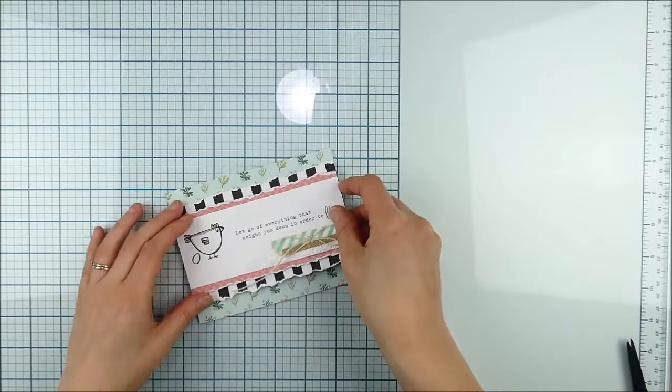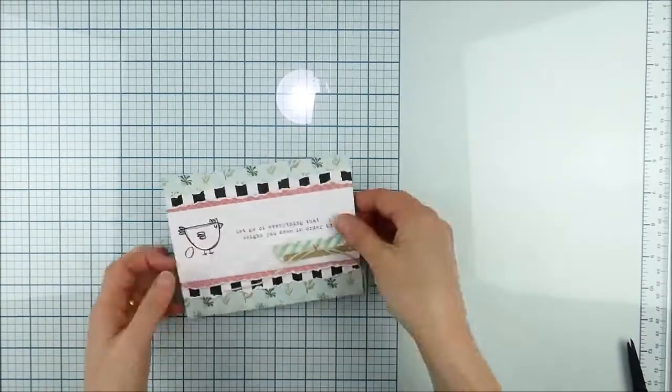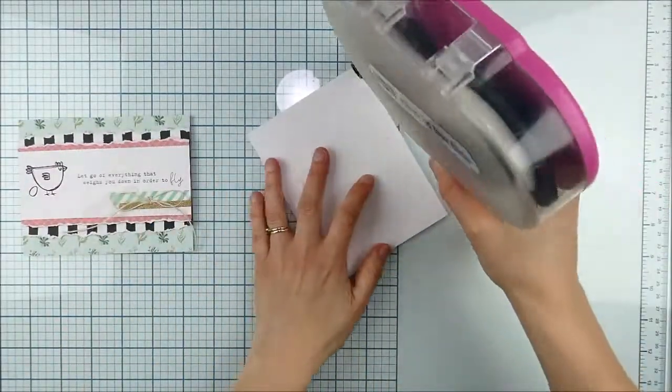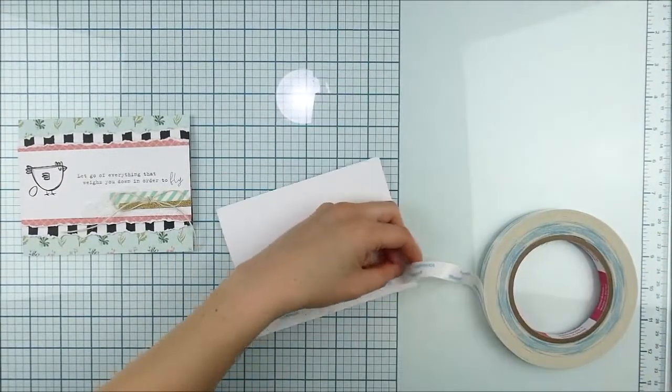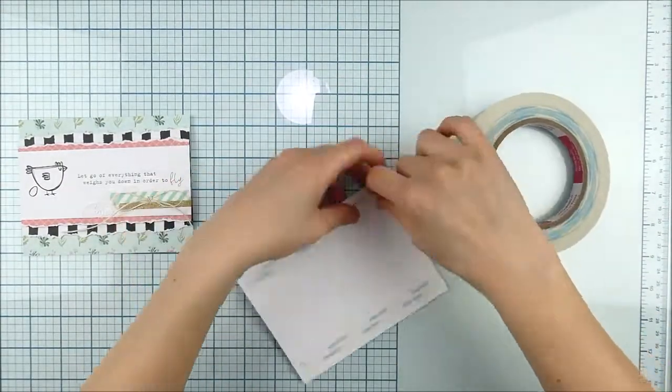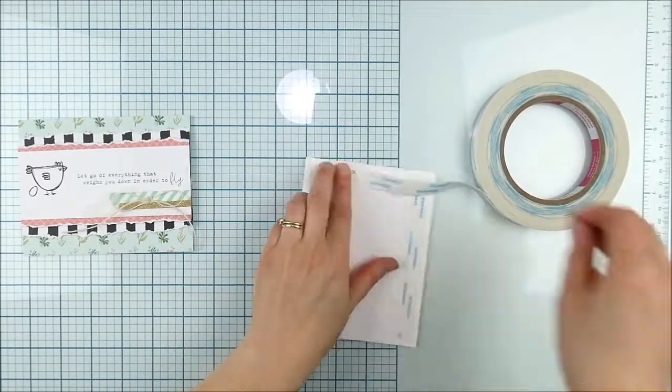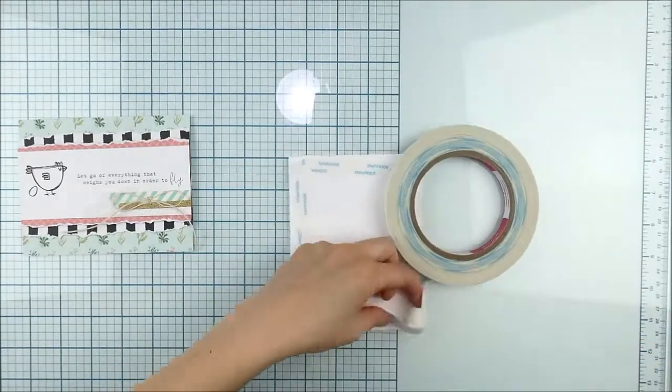And then you still get that little bit of feel of dimension just from the paper edges being curled up a bit, and then I forgot my tape runner was empty, so I grabbed that score tape again to go ahead and adhere this onto my white top folding horizontal card base.